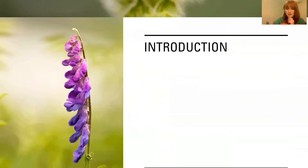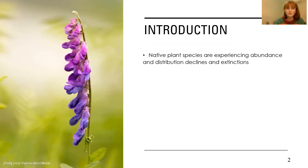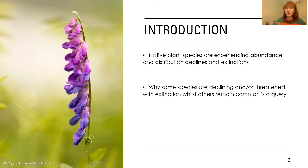As I'm sure you're all aware, many native plant species have been experiencing abundance and distribution declines and extinctions, not just within Britain but within Europe and worldwide. These declines in plant species are a growing threat to our global biodiversity. A common question within plant conservation is: why are some species declining and threatened with extinction whilst others remain common?